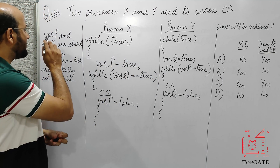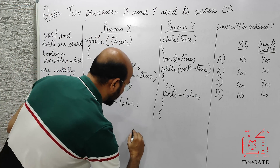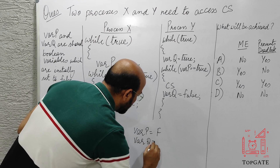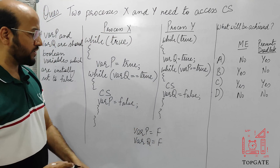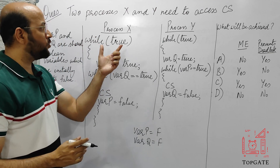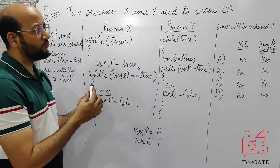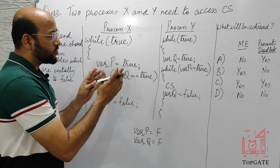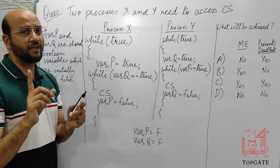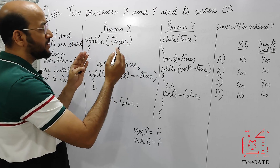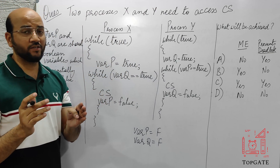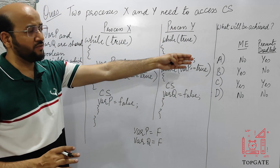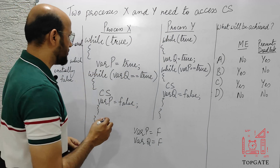Initially, variable P and variable Q are both set to false. We need to test two things: mutual exclusion and deadlock. We'll test the scenario where process X and Y both want to access the critical section at the same time, and determine whether deadlock occurs and whether mutual exclusion is achieved.